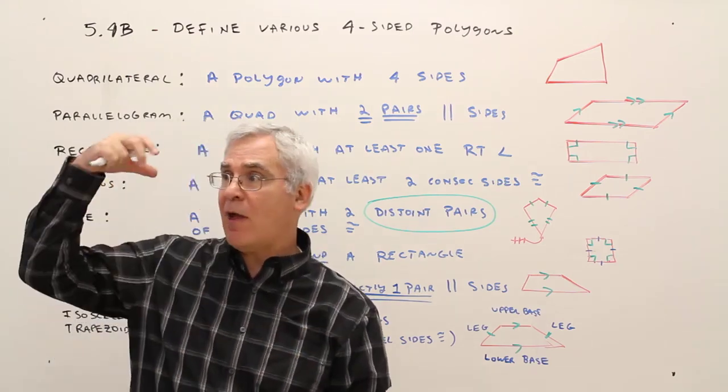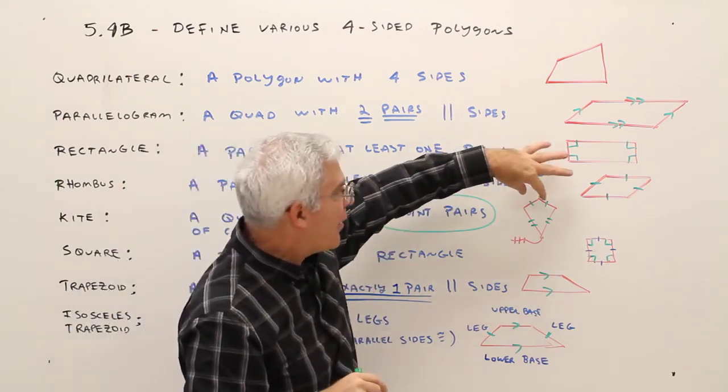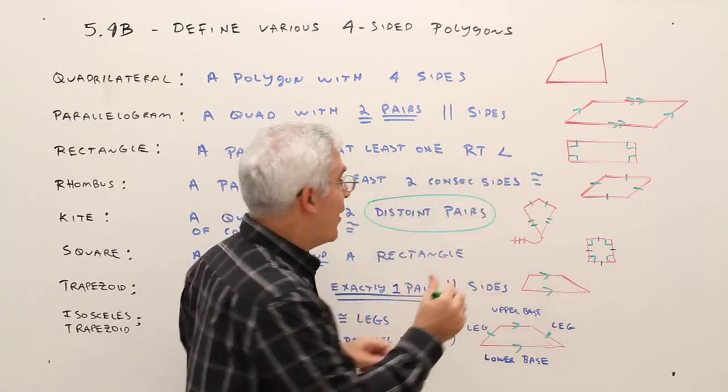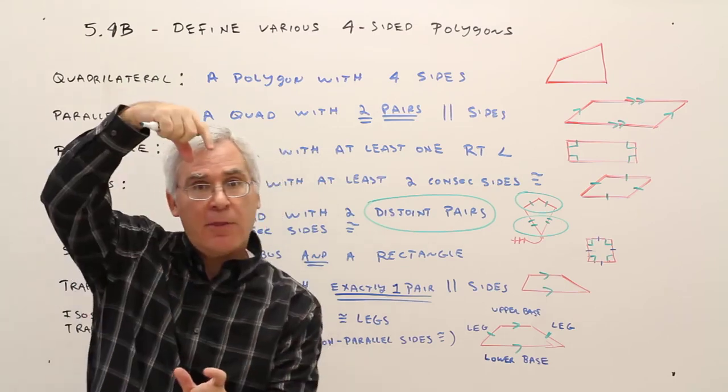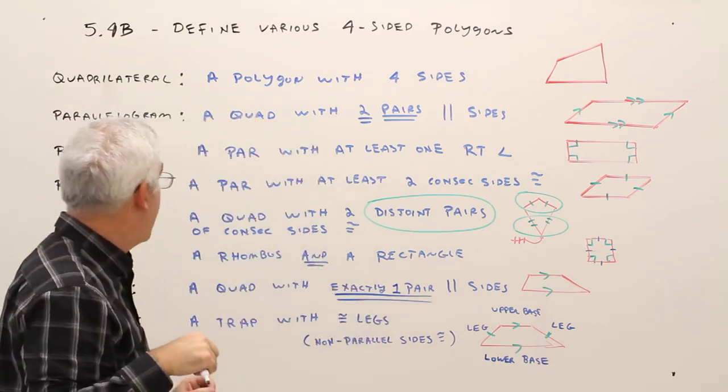Disjoint means I've got this pair and this pair. I'm not mixing and matching. For example, I'm not calling this a pair and this a pair. I've double dipped in that side. So I've got a pair there and I've got a pair there, and those two disjoint, not mixing and matching, sides are congruent.